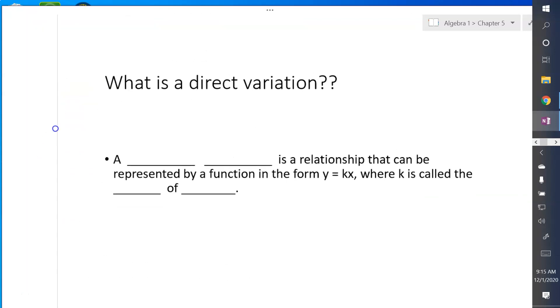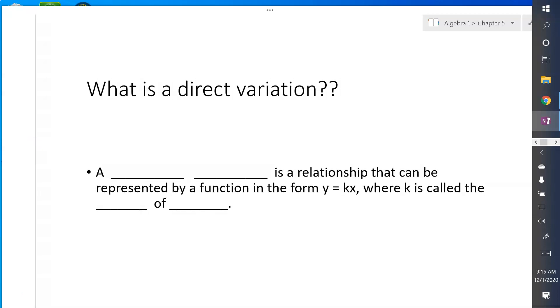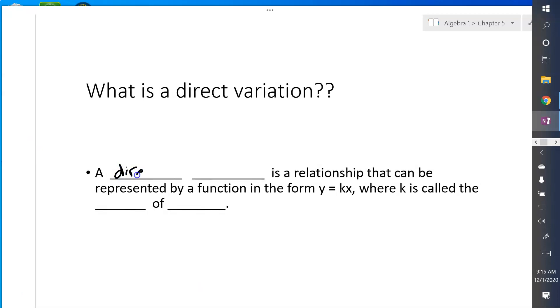So first of all, what is a direct variation? A direct variation is a relationship that can be represented by a function in the form of y equals kx, where k is called the constant of variation. And that's probably the biggest key for today, is this idea of y equals kx would be a direct variation.